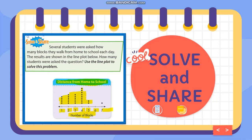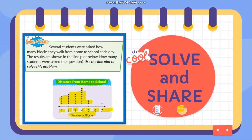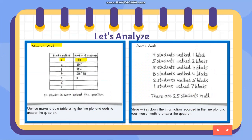Now let's analyze the students' work. Monica's work makes a data table using the line plot and adds to answer the question. Block one has four students — there are four dots above one. Above two there are five, above three there are five, above four there are two, four, six, eight — so eight students.